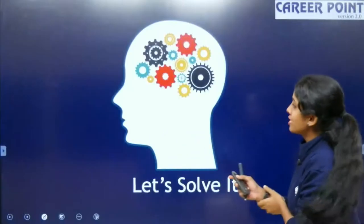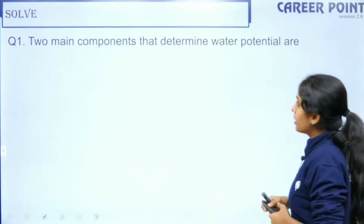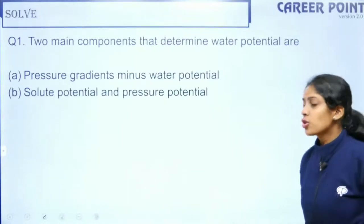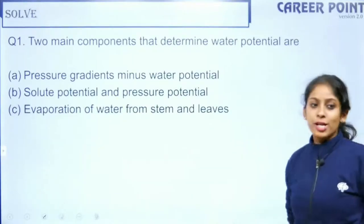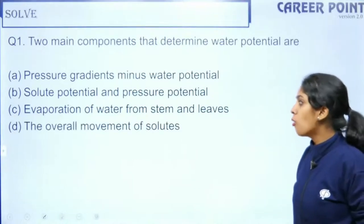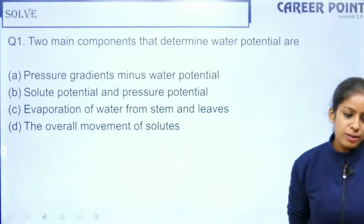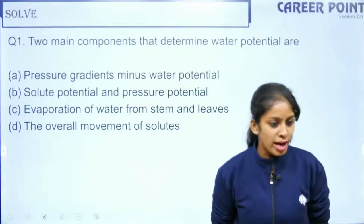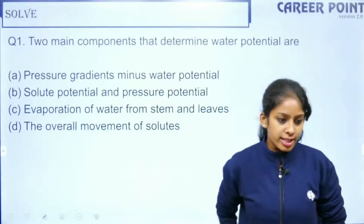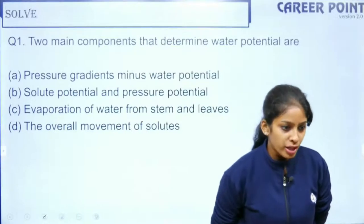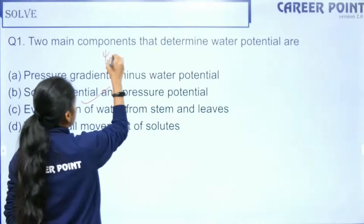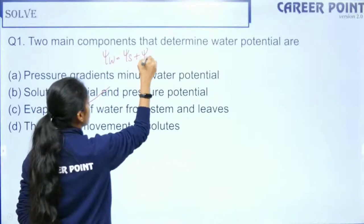Question one: Two main components that determine water potential are — (a) pressure gradient and water potential, (b) solute potential and pressure potential, (c) evaporation of water from stem and leaf, (d) overall movement of solute. The answer is (b): water potential equals solute potential plus pressure potential.